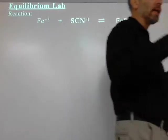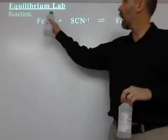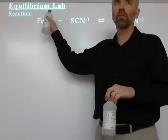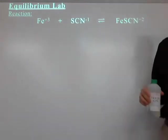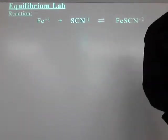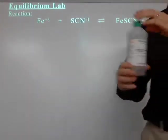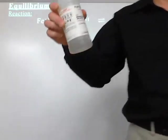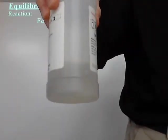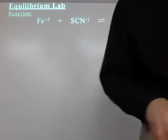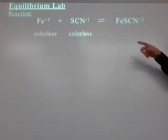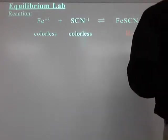So basically, this is the lab we're doing. In this lab, you're going to add two chemicals together. All I'm going to write down is the net ionic equation, where the Fe³⁺ ion gets together with the SCN⁻ ion and makes FeSCN²⁺.